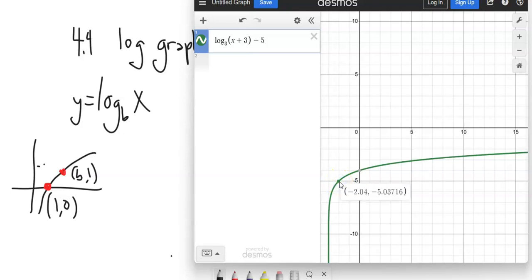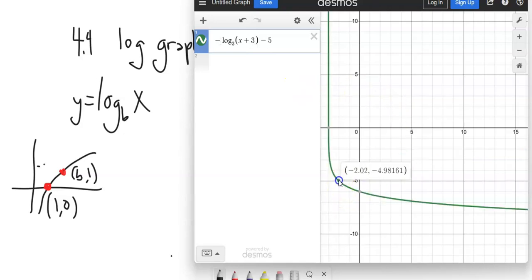And this point that was over at (3,1) has been shifted left 3, down 5 as well. We could do things like negate this as well. Let's see what it does. It just flips it. It still goes through that point. Everything else gets flipped. Think about doing the flipping first and then doing the transformations left and right.